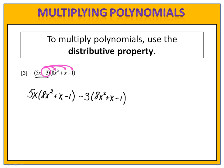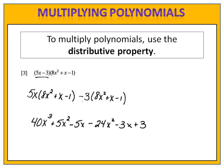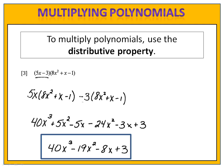Distribute the 5x, distribute the minus 3, and we end up with 40x to the 3rd plus 5x squared minus 5x minus 24x squared minus 3x plus 3. Combine like terms and we have 40x to the 3rd minus 19x squared minus 8x plus 3.